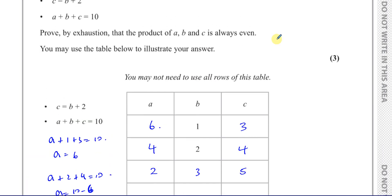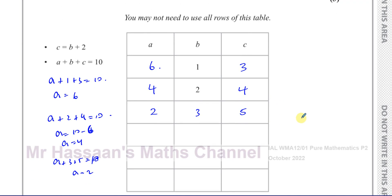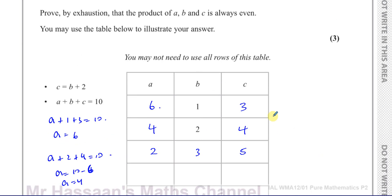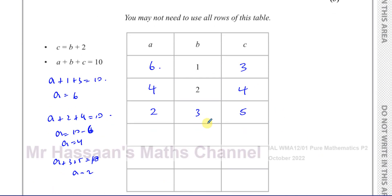So here I'm going to write, it says prove by exhaustion that the product of A, B and C is always even. So those are the values of A, B and C. Now, if I continue, like for example, if I make this four, then this is going to be two more than four, which is six, and then A is going to become zero.